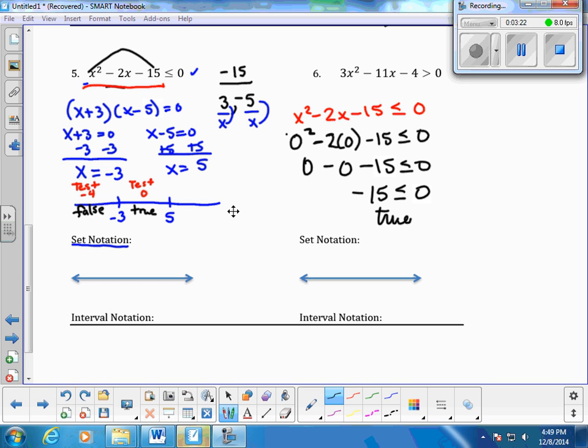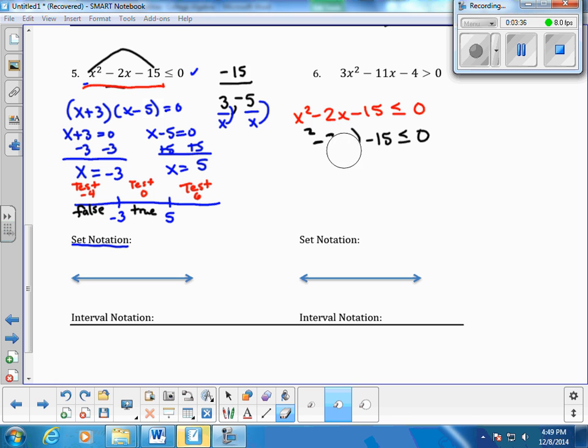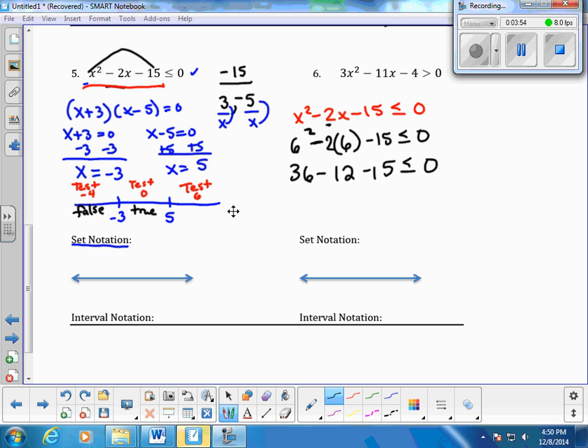And then, I'm going to test anything bigger than 5. I can pick any one. Number 6, 10, 15, 500. I'm going to pick an easy one, it's 6. And then, I'm going to come up here, plug in a 6. 6 squared is 36. Minus 12 minus 15 is less than or equal to 0. 36 minus 12 is going to be 24. Minus 15 is 9 is less than or equal to 0. That is false. So, when I say this is false, I go back and my answer is going to be where it's true. So, it's true from here to here.